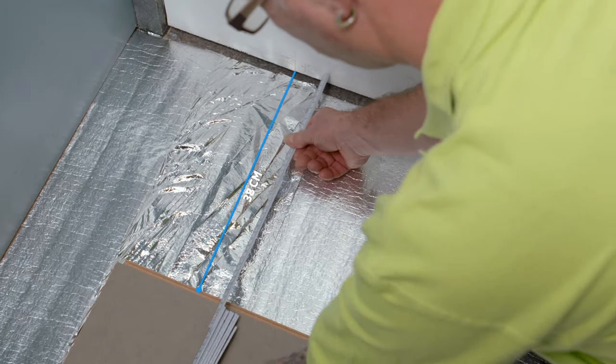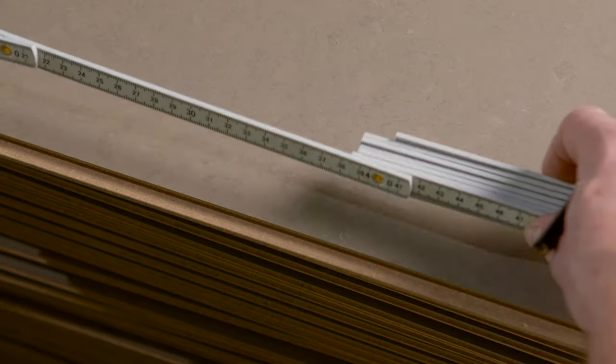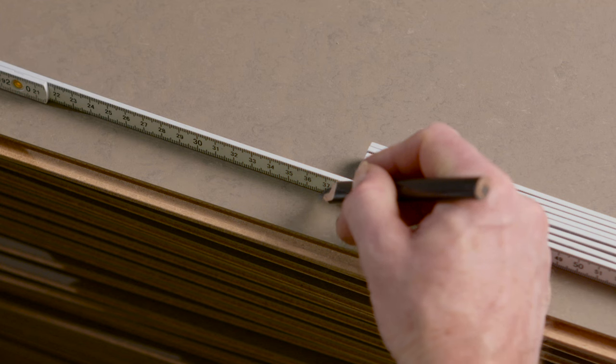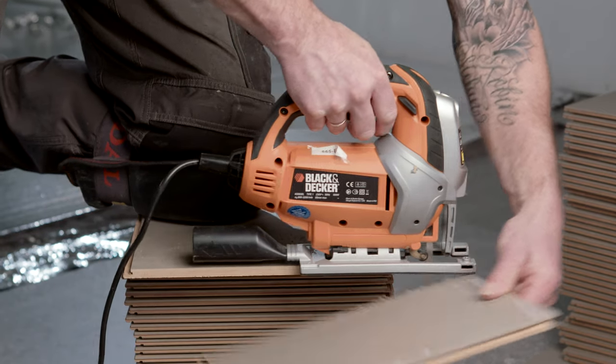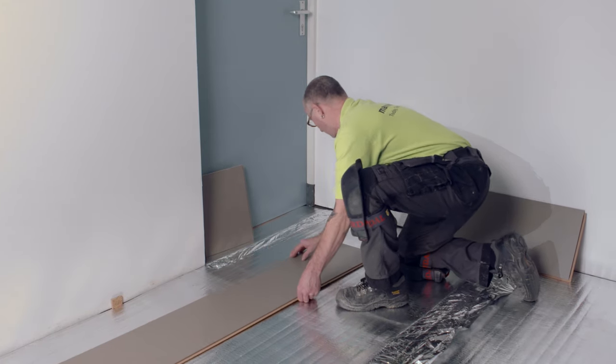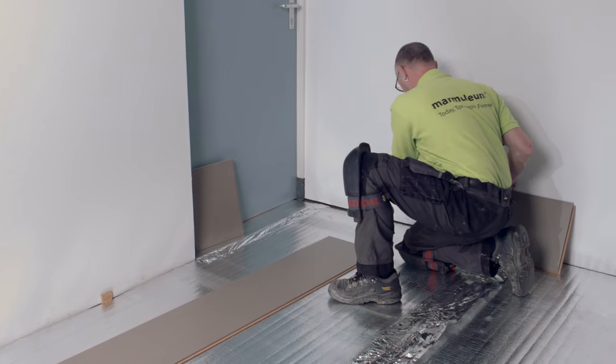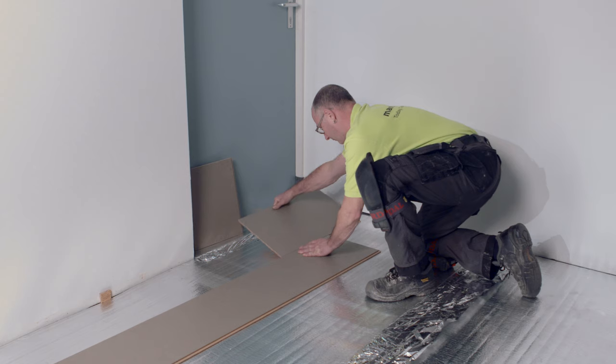Measure the distance between the board and the wall and subtract 1 cm. Measure and mark it on a board and saw it to size. Gently pull the row off the wall and place the last piece of flooring with the use of the temporary board.